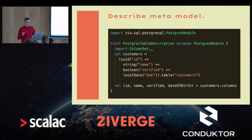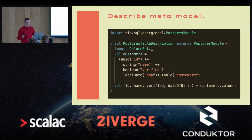To describe the meta model, we just extend the Postgres module. ZioSQL provides a DSL that lets us describe our table, and once we have our table we call dot columns, which gives us back a flat tuple of columns that we then use in our queries.